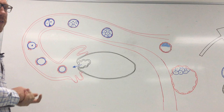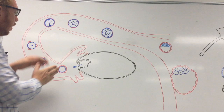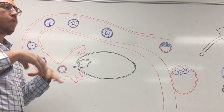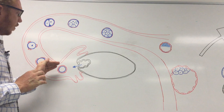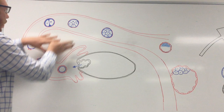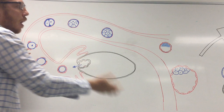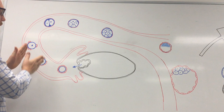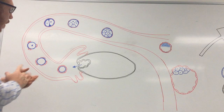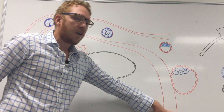Before the sperm can fertilize the egg, it must undergo capacitation. Within the female reproductive tract, the sperm has to remove certain proteins and liquids from its head to allow it to fertilize the egg. This takes approximately seven hours. So even a sperm that arrives within 30 minutes still has to go through that process. It's not always the first one to arrive — capacitation must happen first, and only once capacitated are the sperm ready to fertilize the egg.